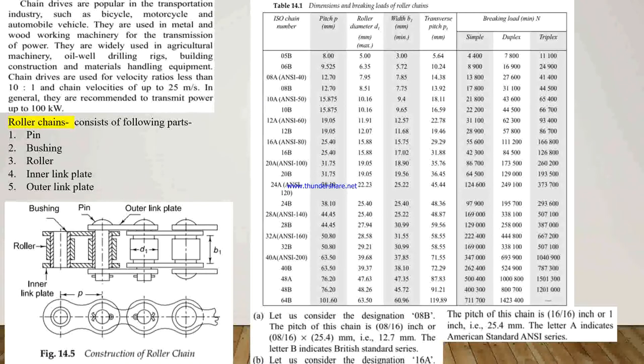The applications of chain drives are mostly in the transportation industry such as bicycles, motorcycles, and automobile vehicles. They are also used in metal and woodworking machinery for transmission of power, and are widely used in agricultural machinery, oil well drilling rigs, building construction, and material handling equipment. The chain velocity ratio is less than 10:1 and chain velocity up to 25 meters per second. In general, they are recommended to transmit power up to 100 kilowatts.